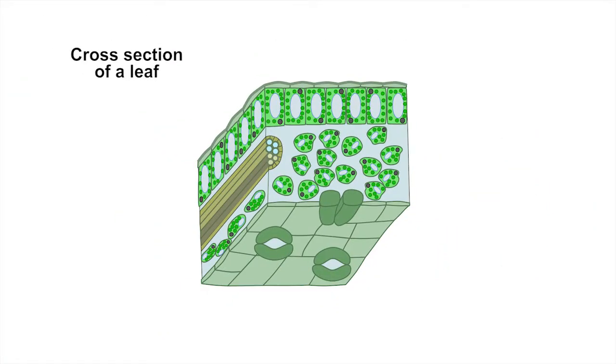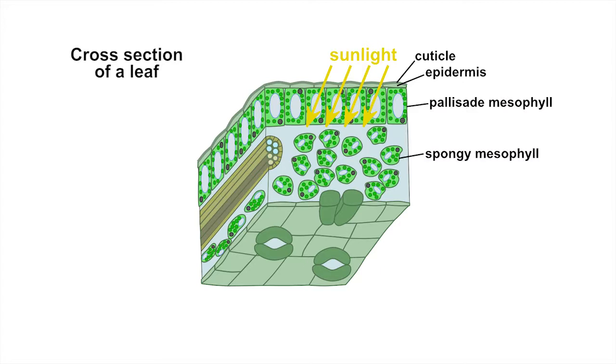If you look at a cross section of the blade under a microscope you can see a thin waxy cuticle on the upper surface along with the epidermis that together act as a protective barrier, letting sunlight in but preventing the leaf from drying out. Below that are the palisade and spongy mesophyll cells containing organelles called chloroplasts filled with green chlorophyll where photosynthesis takes place.